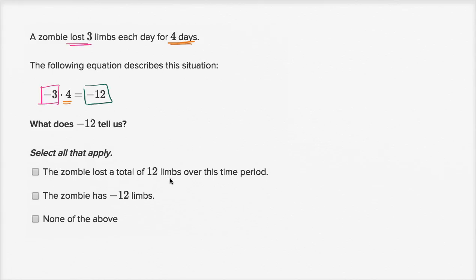So what does negative 12 tell us? That's why I just said it. The zombie lost a total of 12 limbs over this time period. Yep, that looks right. Let's see what these other ones.